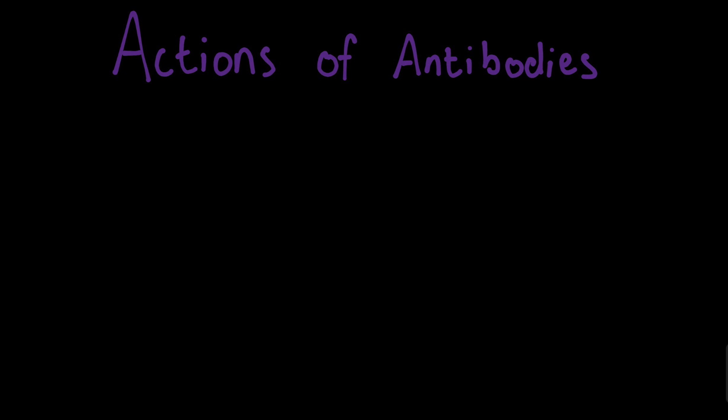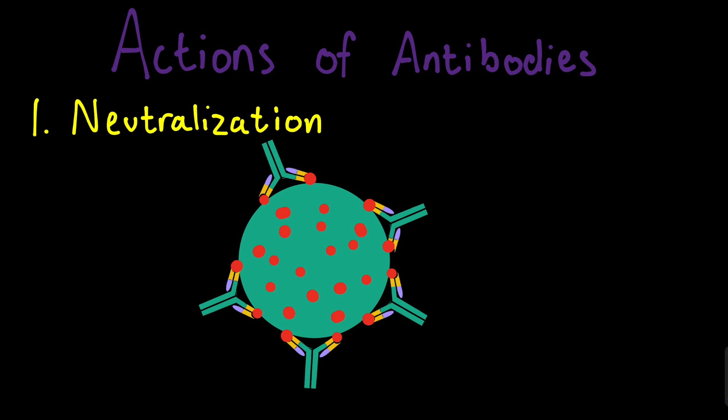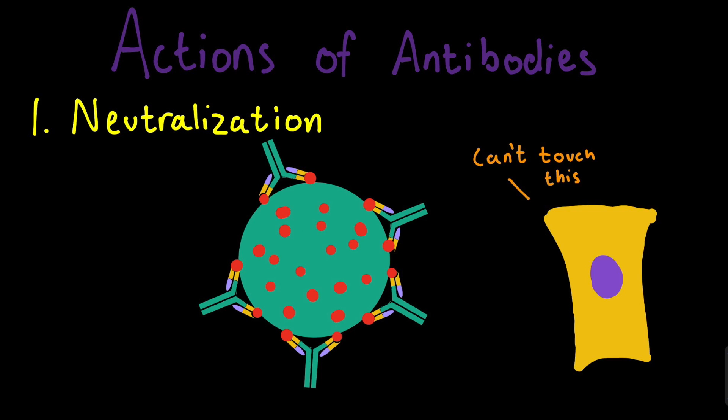Now what do these antibodies do? Well they perform four main mechanisms. The first mechanism includes neutralization. This is when antibodies bind to the active region of an antigen of a foreign pathogen to prevent that antigen from attaching to healthy cells and harming them.